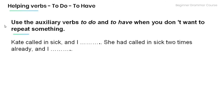Also know that we use the auxiliary verbs 'to do' and 'to have' when you don't want to repeat something. Read the following sentences and fill in the blanks using the appropriate form of the helping verbs. 'Kate called in sick and I ___.' Answer: 'Kate called in sick and I didn't.' 'She had called in sick two times already and I ___.' Answer: 'She had called in sick two times already and I hadn't.'